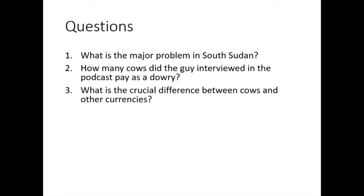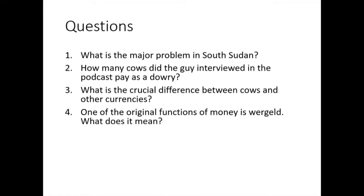Cows can die, which is sad, and they can reproduce — that's how new units of money are created. One of the original functions of money is 'wergild' — it's a penalty you pay for a crime or as a form of reconciliation. It is money paid as compensation, exactly.